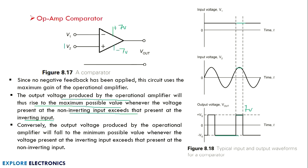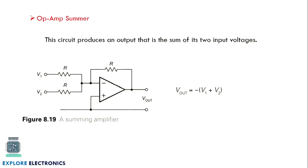Op-amp can also be used as a summer, also called a weighted summer or adder. Voltages V1 and V2 are applied to the inverting input terminal, and the non-inverting terminal is grounded, with a feedback resistance R_f. The output is the addition of V1 and V2 weighted by R_f and R1, R2. If all three resistances are the same, V_out = -(V1 + V2), with the minus sign because inputs are connected to the inverting terminal.